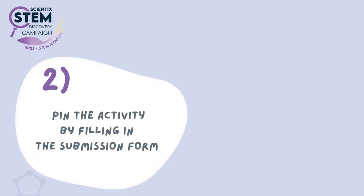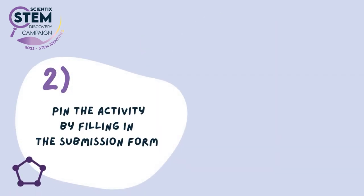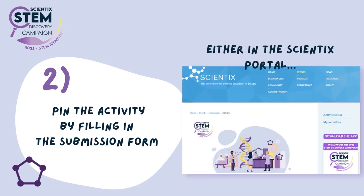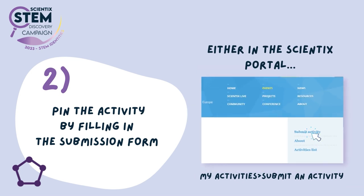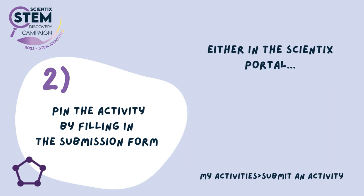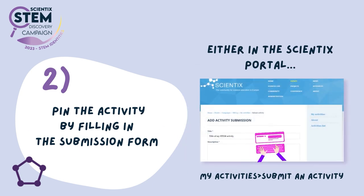To submit your activity, fill in the submission form, which you can do in two ways. Either on the Scientix web portal by clicking My Activities — you'll find that button in the top right corner of all STEM Discovery campaign pages — then click on Submit Activity and fill in the information as instructed.